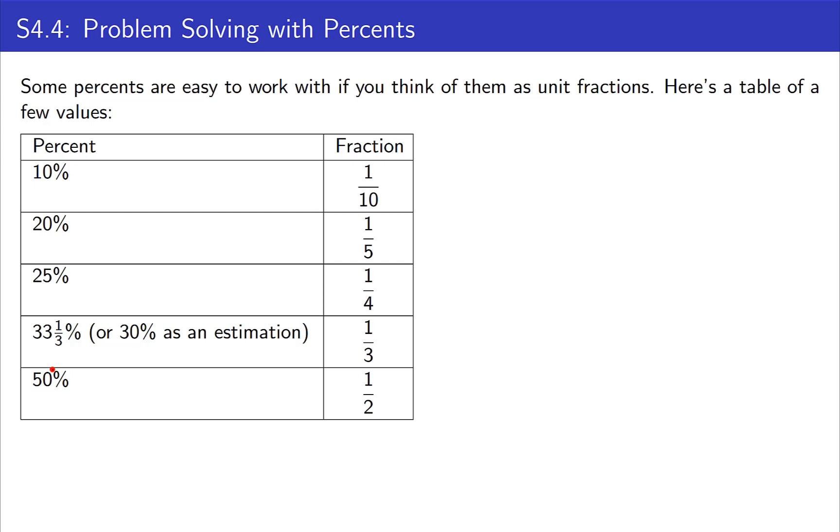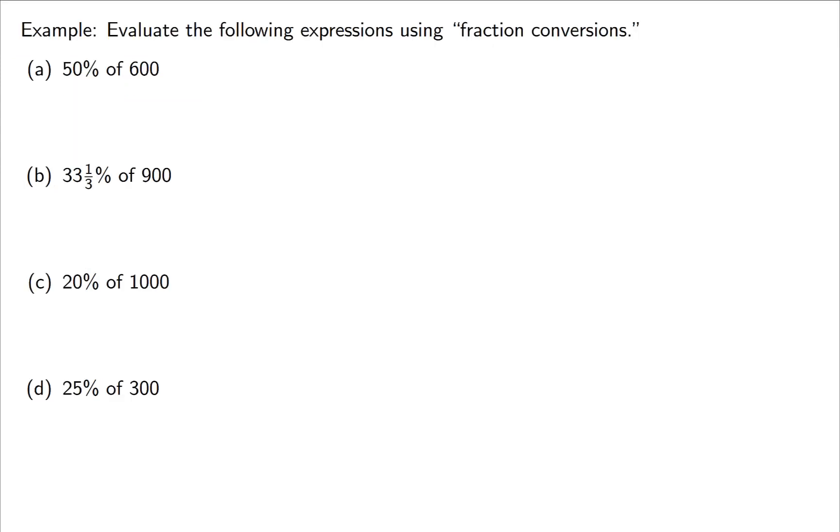Let's do some examples of this. 50%, as I mentioned, is thinking 1 half. What is 1 half of 600? Well, you don't really have to think about it too hard. Just divide it by 2, and you get 300.